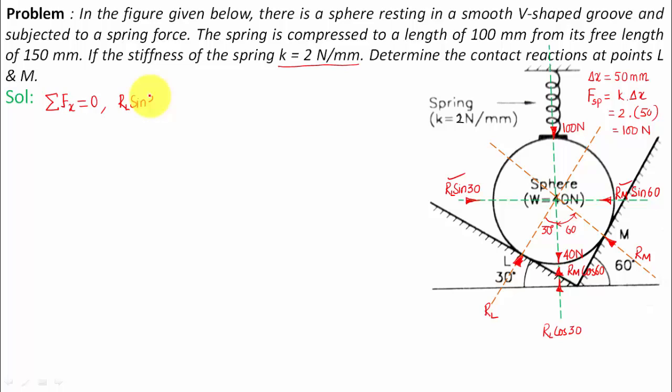When you do so we have this force positive right hand side direction and this force negative left hand side direction. So R_L sin 30 minus R_M sin 60 and all of this is equal to zero since everything is in equilibrium. Now you can get the value of R_L.